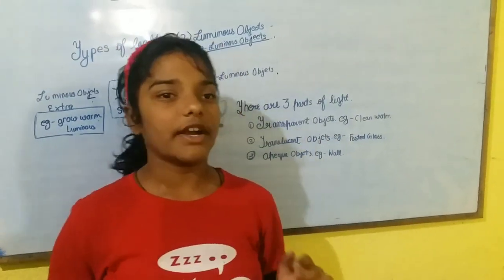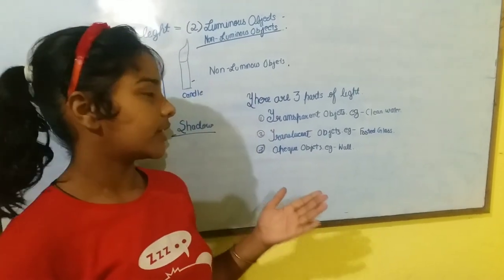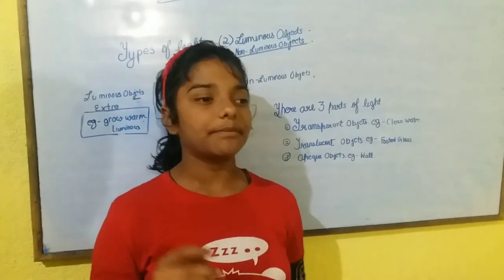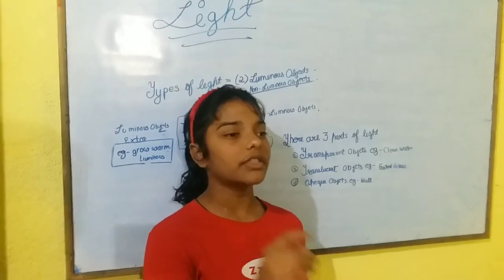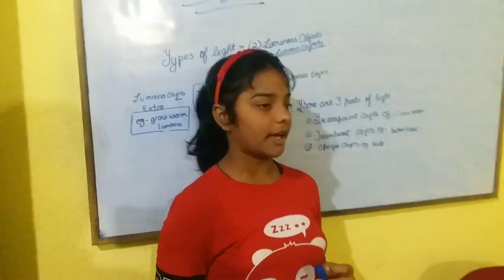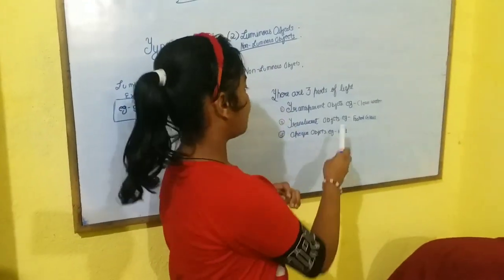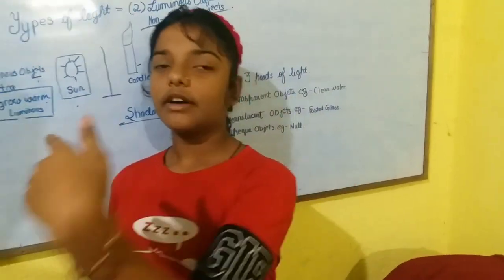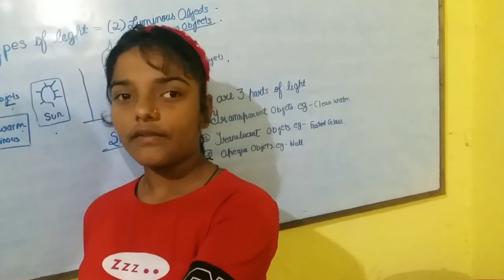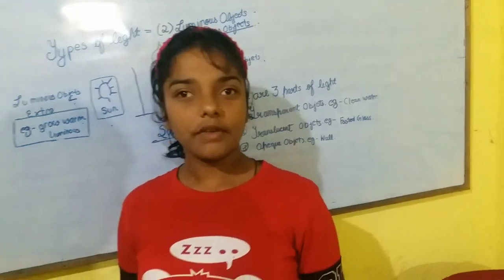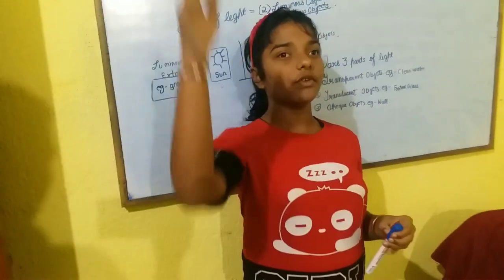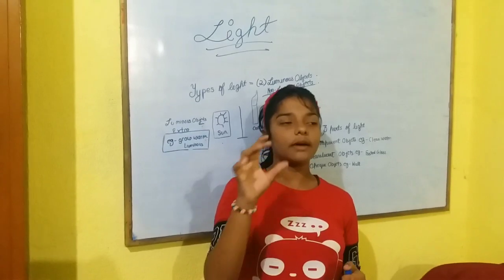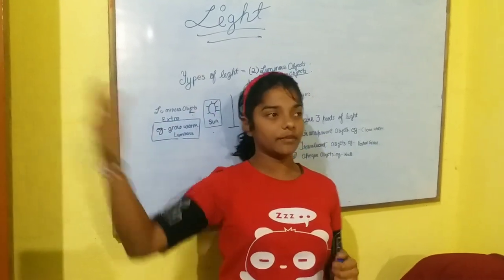A translucent object is defined as an object that allows only some light to pass through it. An example is frosted glass. As we know, through a normal window we can see outside clearly, but when we put frosted glass, we can only see something faintly on the other side.